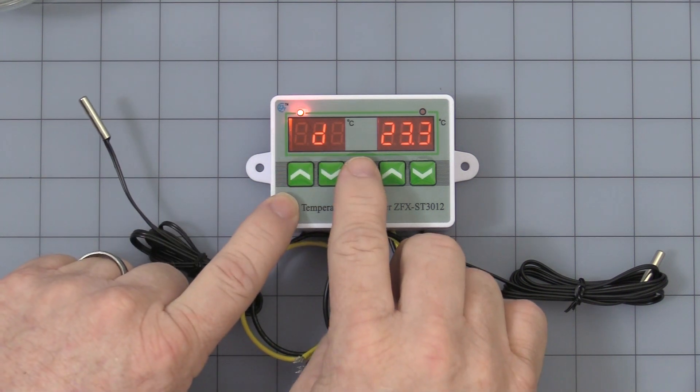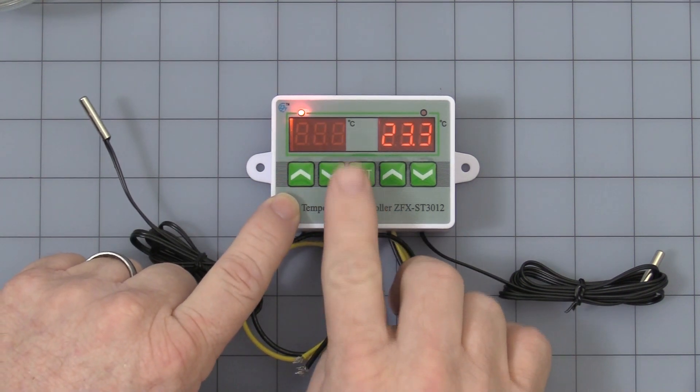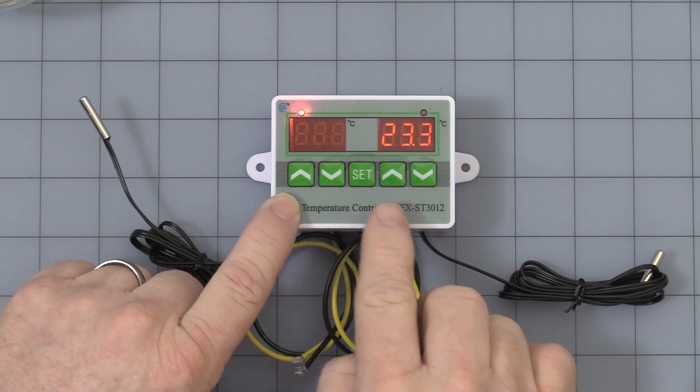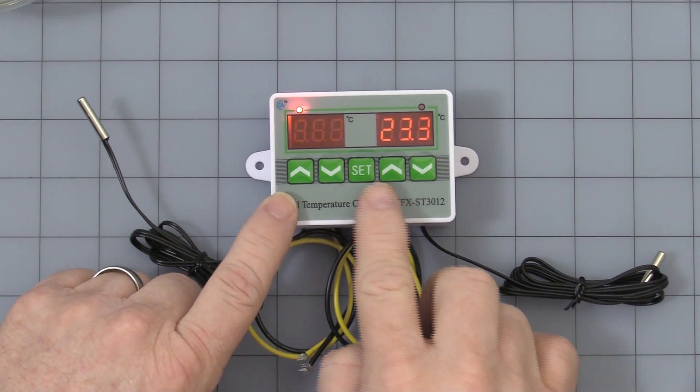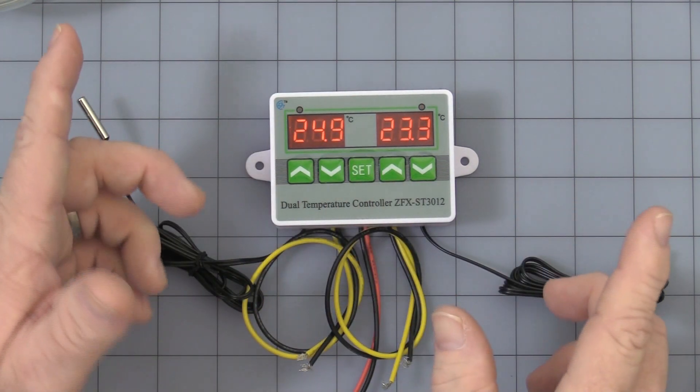Press set again and you get this little number D. That's the actual hysteresis setting. It comes factory set at 5 degrees Celsius hysteresis. Leave it alone. Now let me show you what that means.